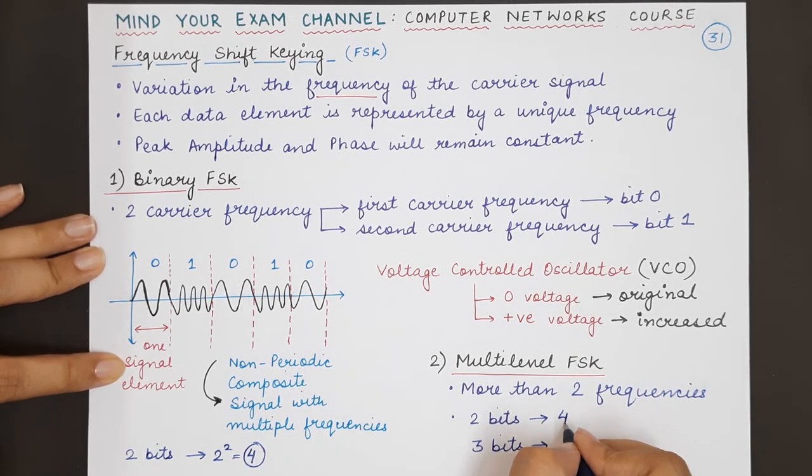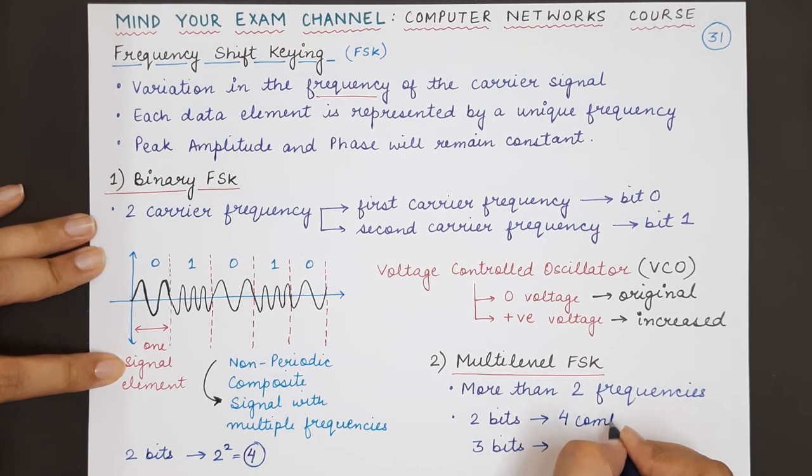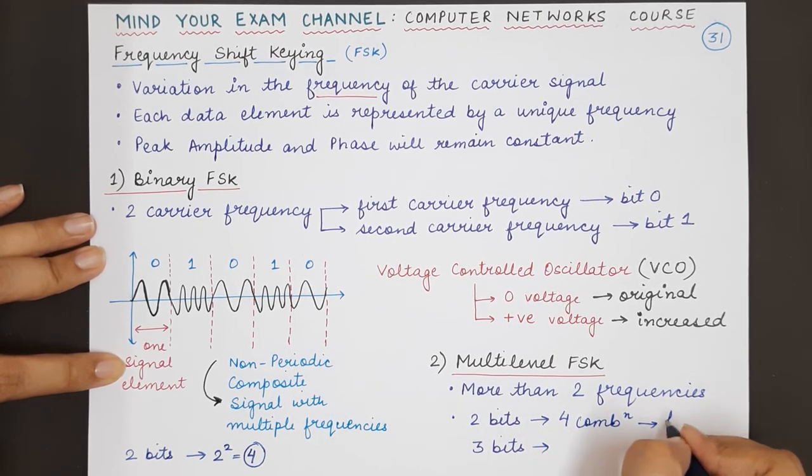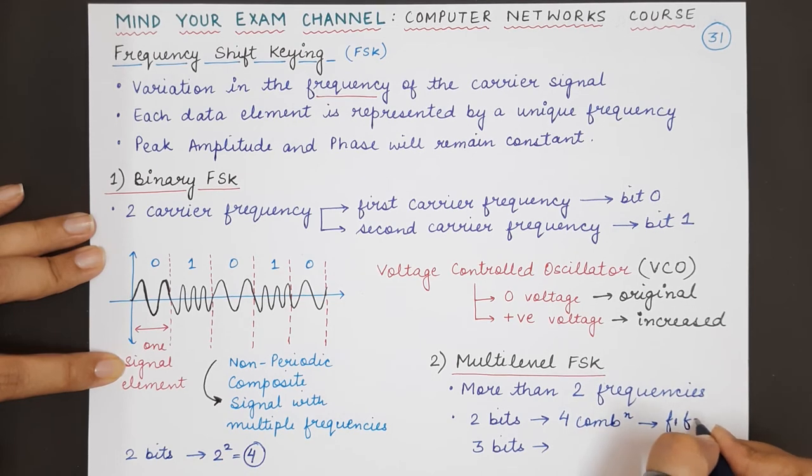In this case, two bits will have four combinations which will be represented by four different frequencies: F1, F2, F3, and F4.